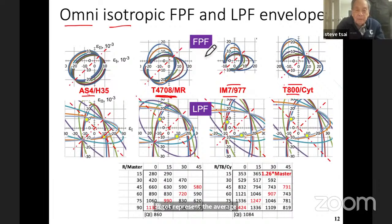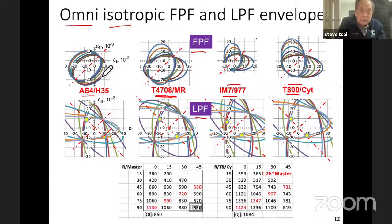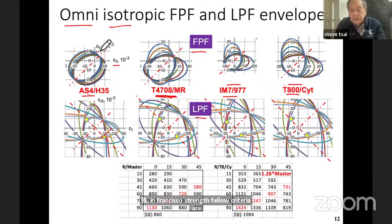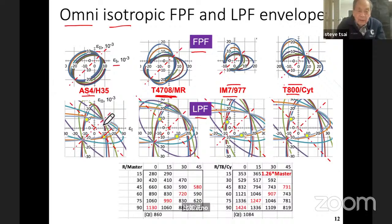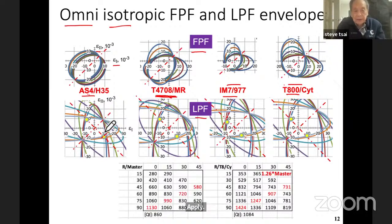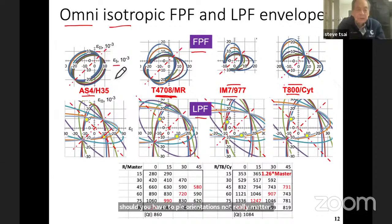We have two criteria: one for first ply failure and one for last ply failure. In all cases we show all ply angles from 0 to 90 in strength space, because in strength space the failure criteria are independent of the ply orientation — it is a material constant. You can see the first ply failure inner envelope and the last ply failure values. For last ply failure, for all carbon epoxy composites, only the 0 and 90 ply orientations are dominant; all other ply orientations do not really matter. Whereas in first ply failure, the controlling ply varies as you go around the failure envelope.